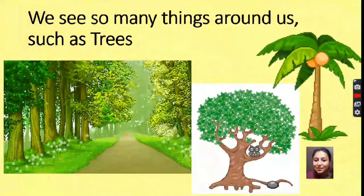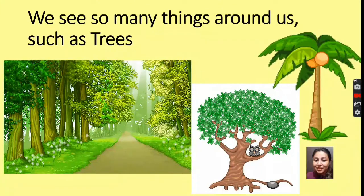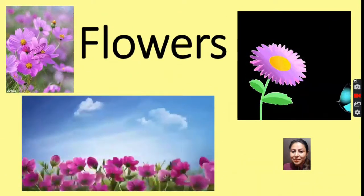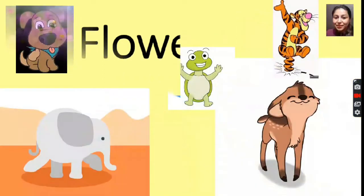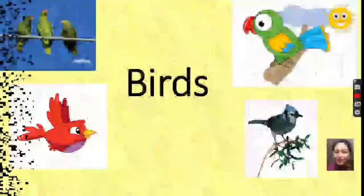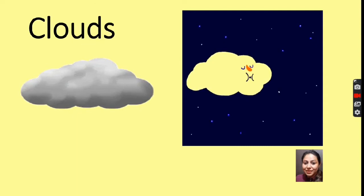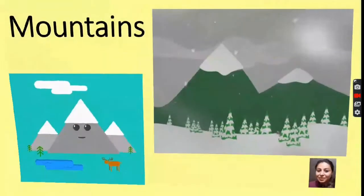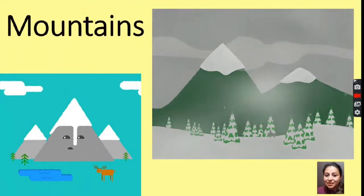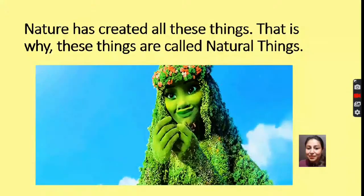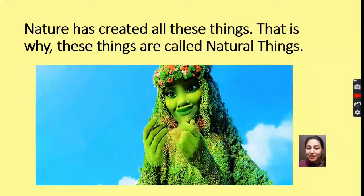We see so many things around us such as trees, flowers, animals, birds, clouds, and mountains. Nature has created all these things. That is why these things are called natural things.